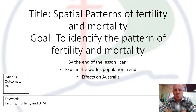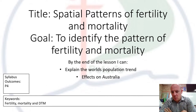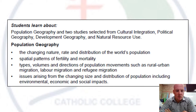This video is about the spatial patterns of fertility and mortality rates. The goal of this lesson is to identify the pattern of fertility and mortality rates around the world and then focus on Australia. We're looking at being able to explain the world's trends and the effects on Australia. Linking this back to the syllabus, we're looking at the second dot point about spatial patterns of fertility and mortality.